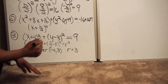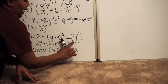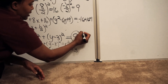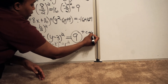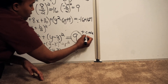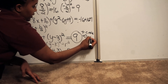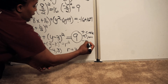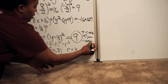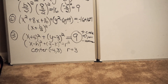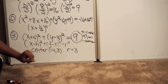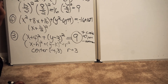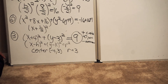One important thing to add: when you complete the process and get a number on the right side, if that number is positive, you actually have a circle. If that number equals zero, you have only a single point. And if the number is negative, the equation is non-existent — it describes nothing real.